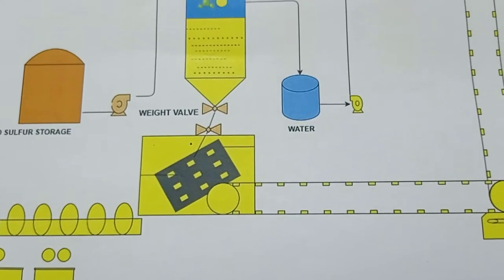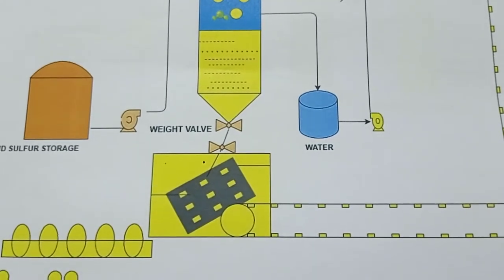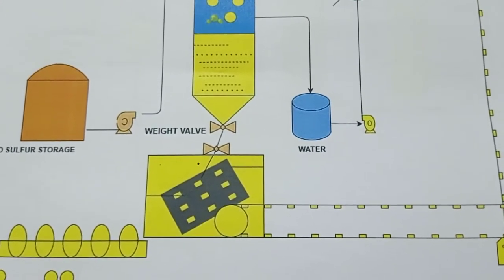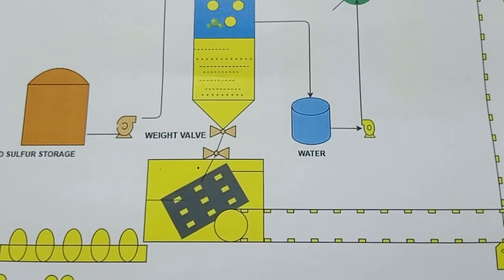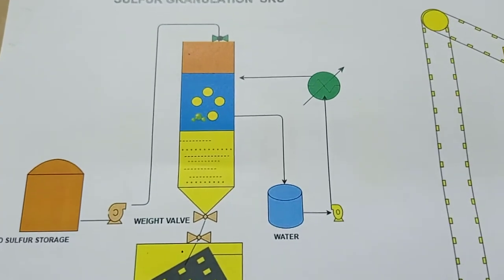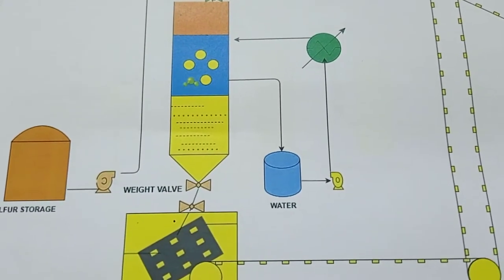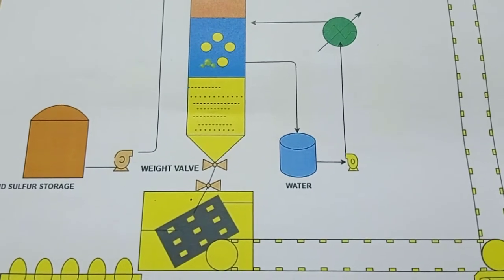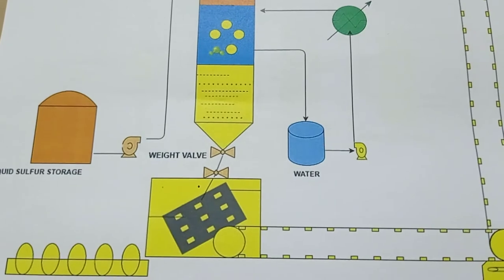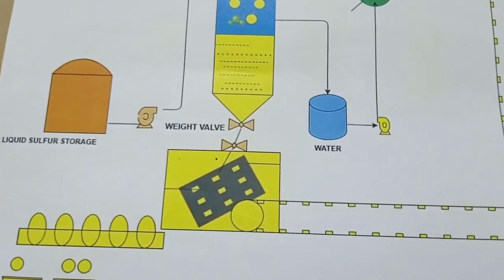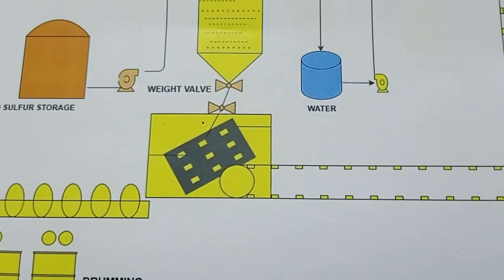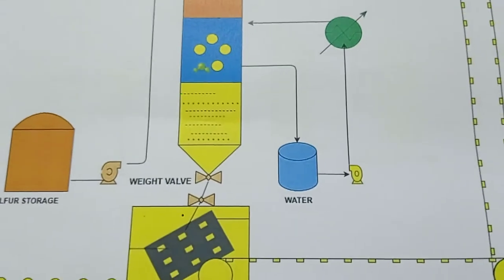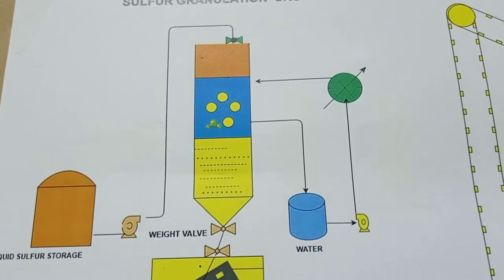From the SWS unit and TGTU we get H2S, and after that we burn it in the sulfur furnace — or you can say the Claus furnace. After the Claus reactor we get sulfur in liquid form. Storing sulfur in liquid form is a really critical task because it requires a continuous heating system, and transporting it is very difficult since sulfur solidifies below 130°C and can block lines and tanks.